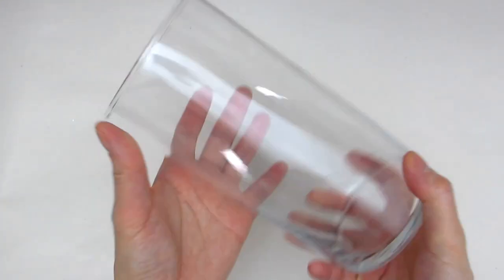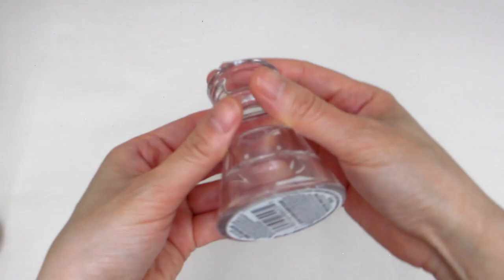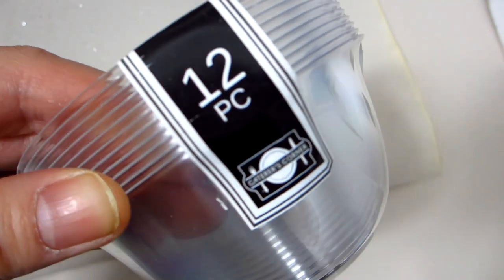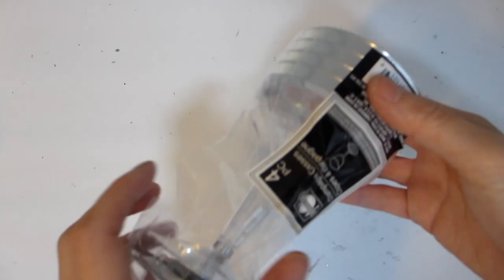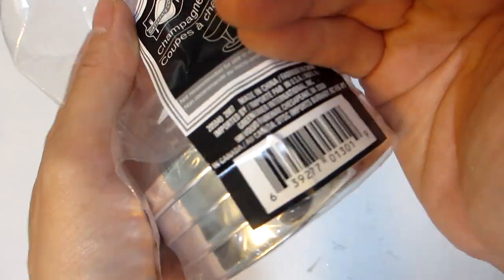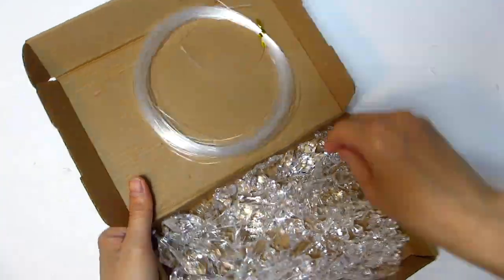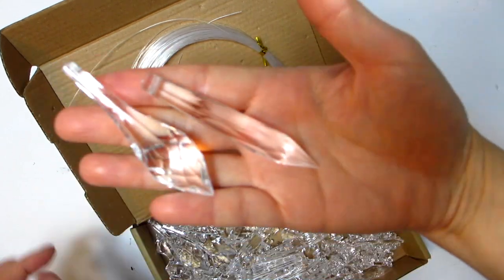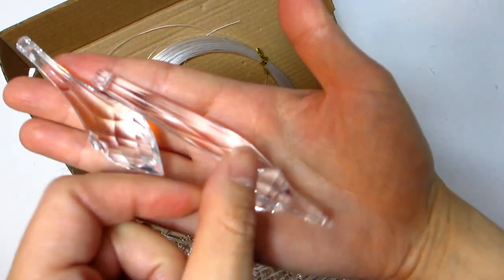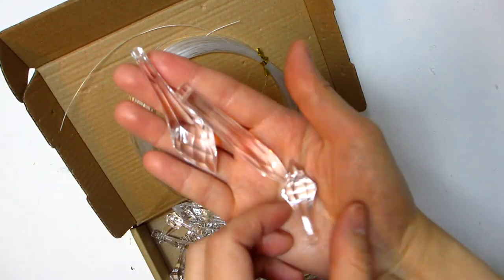We will also need glass candle holders, one small clear plastic bowl, and the stem from one plastic champagne glass. We will also need one acrylic or crystal chandelier pendant. This pack was purchased in bulk from Amazon and came to less than a dollar a piece.